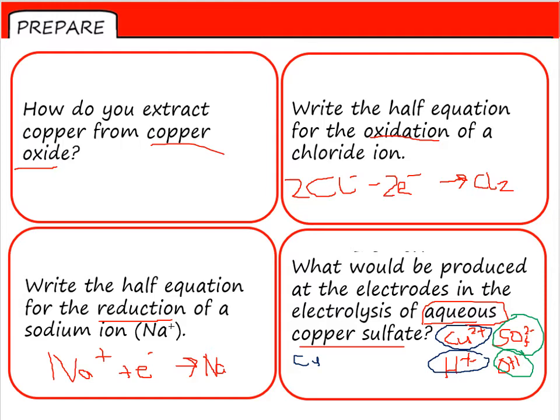But I don't have a halide ion here. So if I don't have a halide ion, what we get forming at the anode, the positive electrode, is oxygen.